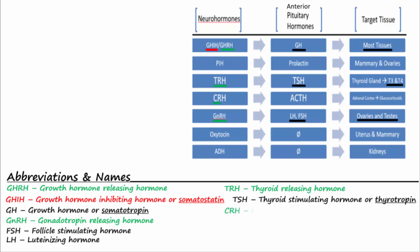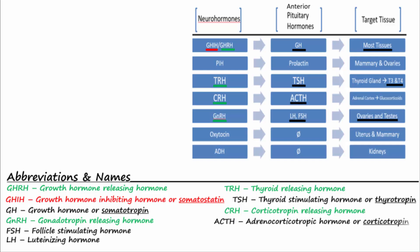Corticotropin releasing hormone, or CRH, is also released from the hypothalamus and causes the increased release of adrenocorticotropic hormone, or ACTH — also known as corticotropin — from the anterior pituitary. ACTH travels through the blood to the adrenal cortex, where it stimulates the release of the glucocorticoid cortisol. Cortisol acts on most body tissues to increase protein and lipid breakdown, increase glucose production, increase blood sugar, and to act as an anti-immune and anti-inflammatory effector.